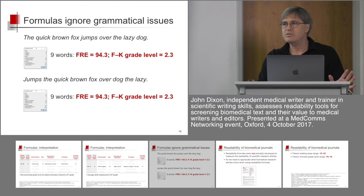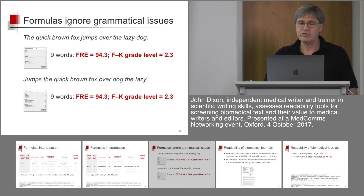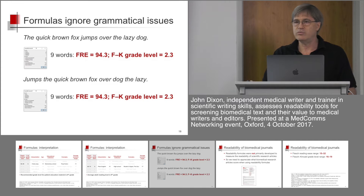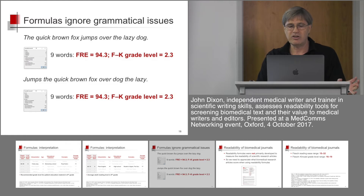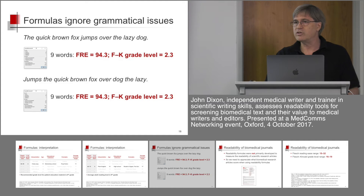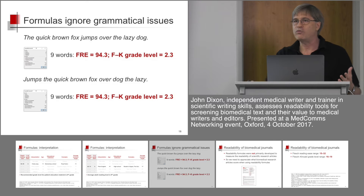We need to remember that formulas simply count words and the length of words — the number of syllables. Formulas ignore grammatical issues. So if you take a simple sentence like 'the quick brown fox jumps over the lazy dog' — 9 words — Microsoft Word will score this with a reading ease of 94, a grade level of 2, very easy reading. But if you take the same 9 words starting with a capital letter and a full stop but scrambled — 'jumps the quick brown fox over dog the lazy' — Microsoft Word will score that sentence in exactly the same way, but it doesn't mean anything. So we need to be very careful about what formulas actually measure.